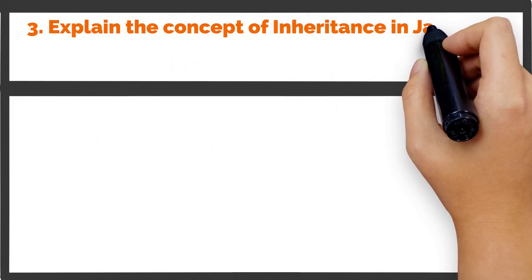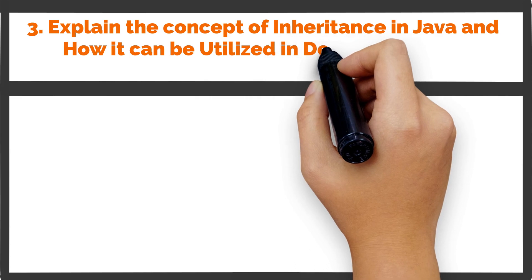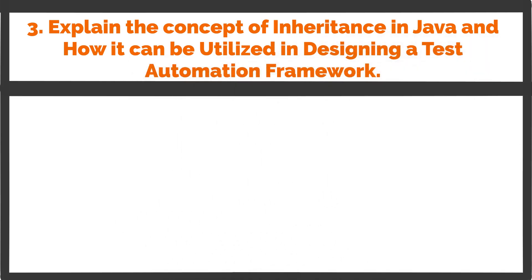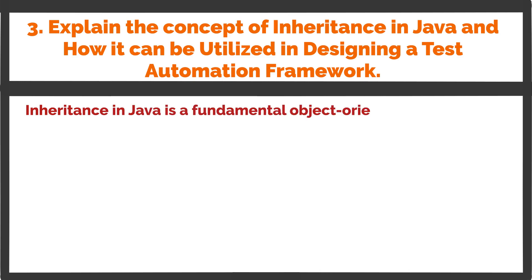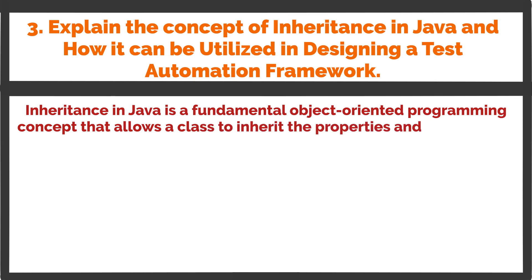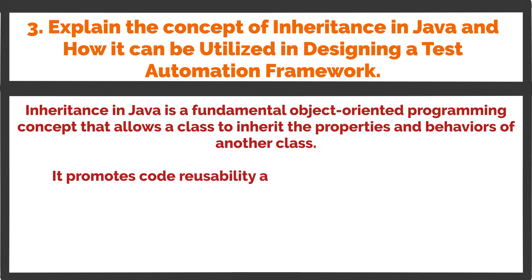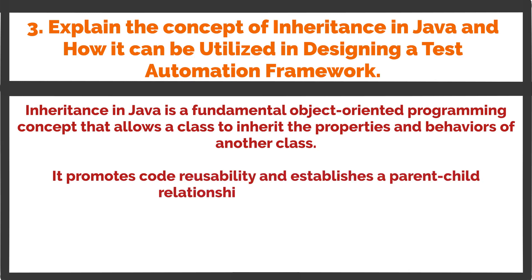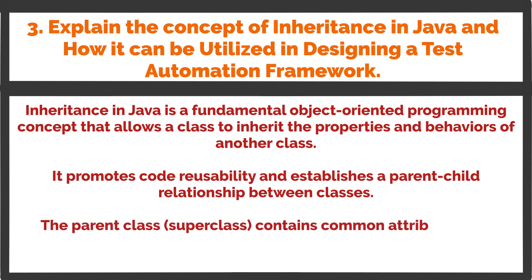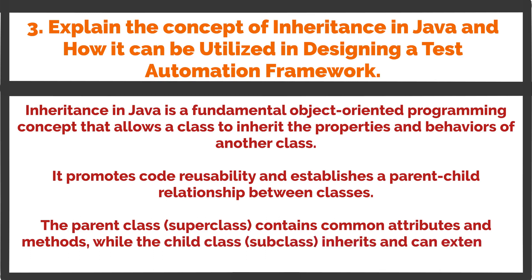Question 3: Explain the concept of inheritance in Java and how it can be utilized in designing a test automation framework. Inheritance in Java is a fundamental object-oriented programming concept that allows a class to inherit the properties and behaviors of another class. It promotes code reusability and establishes a parent-child relationship between classes. The parent class, or superclass, contains common attributes and methods, while the child class, or subclass, inherits and can extend or override these characteristics.